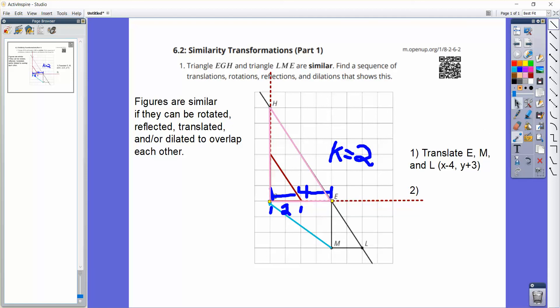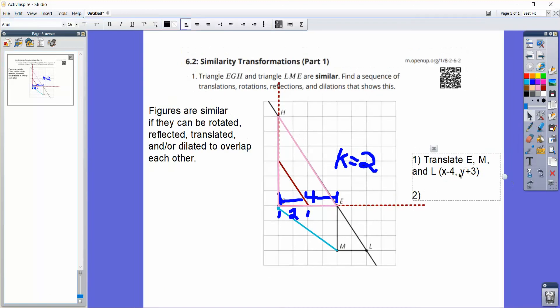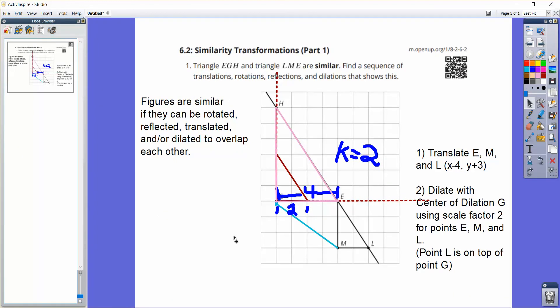So that would be our last step here. Dilate with center of dilation G using scale factor 2 for points E, M, and L. Now, remember that point L is on top of point G, so that won't move. So that's basically a sequence of transformations that would move this triangle on top of that triangle. And by doing that, we would demonstrate that these two figures are indeed similar because any figure that's similar to another can be rotated, reflected, translated, and or dilated to overlap each other. So that would do that.